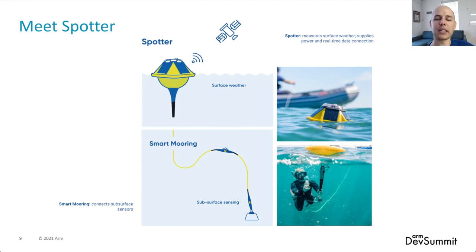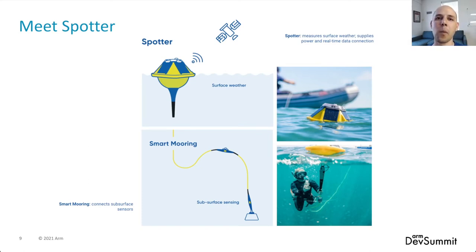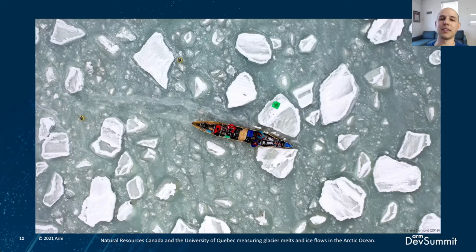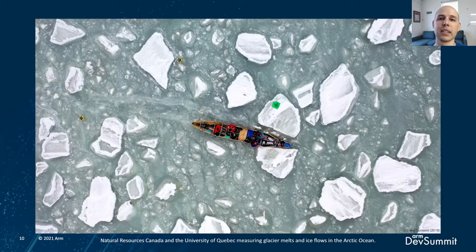Spotter has a sibling called Smart Mooring — it's basically Spotter with an umbilical cord below that allows other sensors to be connected. Here is a photo of one of our customers deploying some of these buoys in the Arctic Ocean. As you can imagine, these get deployed and that's the last we see of them. We will hopefully hear from them for a while, but sometimes things go wrong and we need to figure out as much as we can so we can improve the product over time.